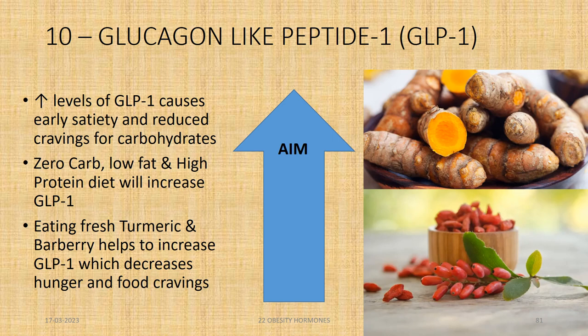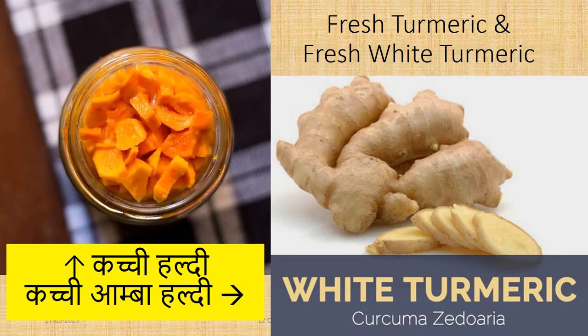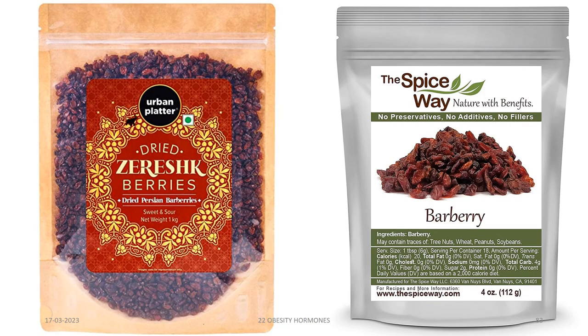The tenth important hormone is glucagon-like peptide 1, or GLP-1. Increased levels of GLP-1 in blood cause early satiety and reduced cravings for carbohydrates. A zero-carb, low-fat, high-protein diet will increase GLP-1. Eating fresh turmeric (kachi haldi) and barberry — which is available dried from online stores in India — before meals increases GLP-1, which decreases appetite and brings satiety much earlier. Our aim should be to increase GLP-1 levels in our blood.